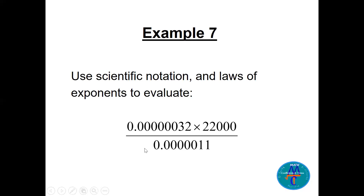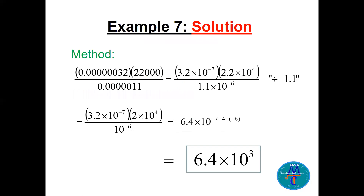I advise you to convert each number into scientific notation first. So you have three numbers: one multiplied by another, divided by a third. Convert each to scientific notation — then it's easy to cancel and multiply powers of 10. The answer is 6.4 times 10 to the power 3. Let's see how.